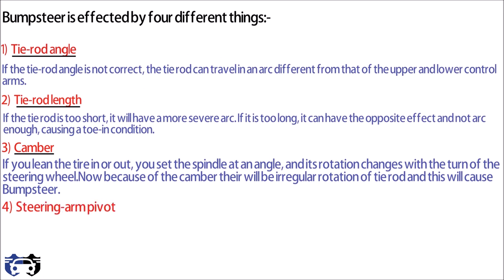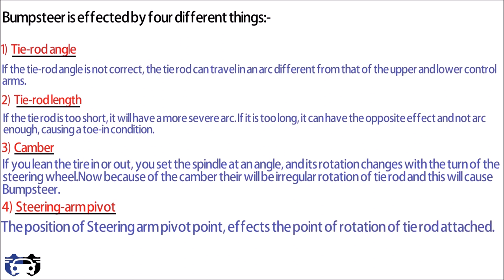Fourth is the steering arm pivot point. The position of steering arm pivot point affects the point of rotation of tie rod, and changing the position of pivot point changes the arc formed by the tie rod, which will affect the bump steer.